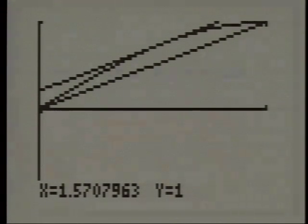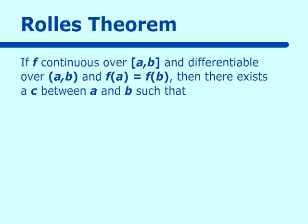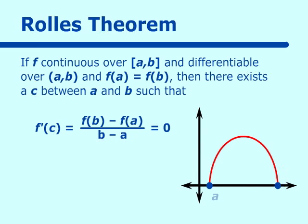Let's go on to our next theorem: Rolle's theorem. If f is continuous over closed [a, b] and differentiable over open (a, b), and f of a equals f of b — and sometimes you'll see that it has to equal 0, but it's not necessarily so — then there exists a c between a and b such that f prime of c equals zero. That's because f of b and f of a are equal, so the secant slope is zero, meaning there must be a horizontal tangent line somewhere between a and b at point c.